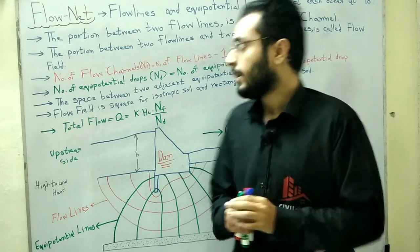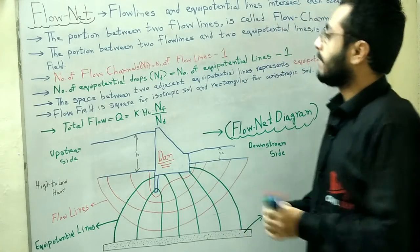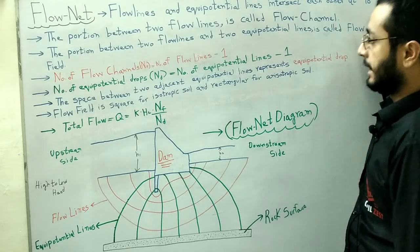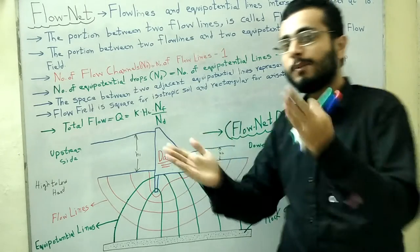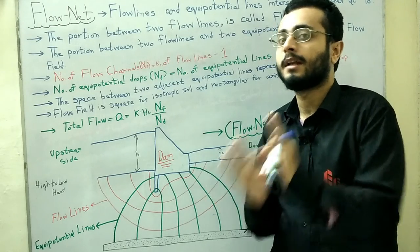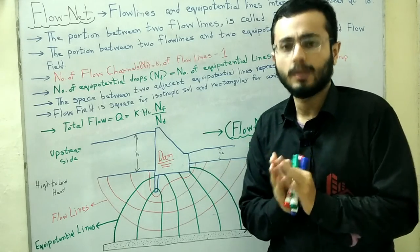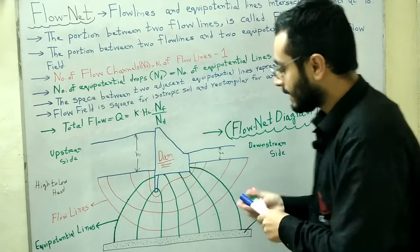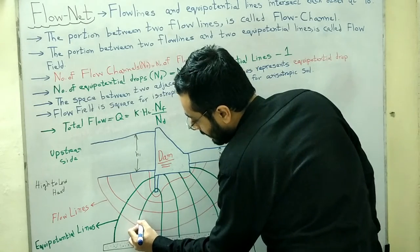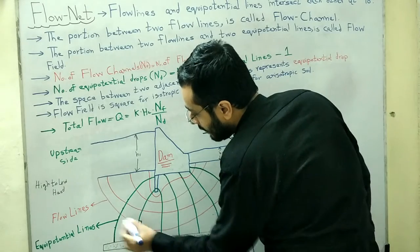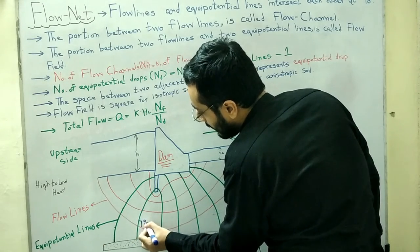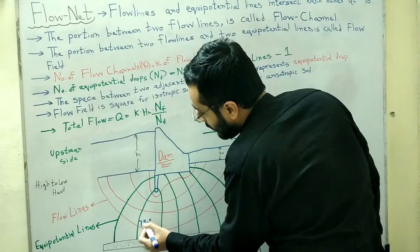Now some characteristics of flow net: flow lines and equipotential lines intersect each other at 90 degrees — they are always perpendicular to each other. Wherever we calculate the angle between a red flow line and a green equipotential line, it will always be 90 degrees.